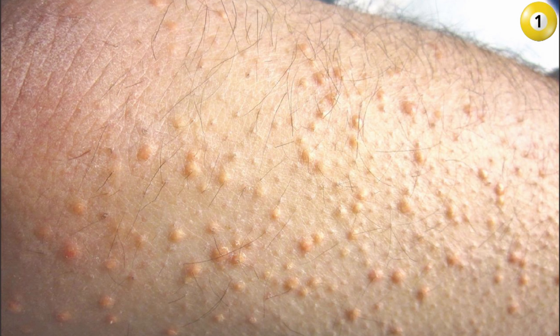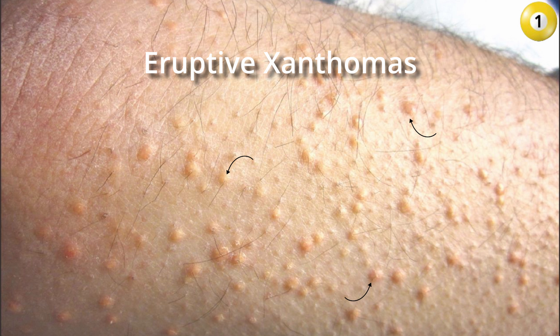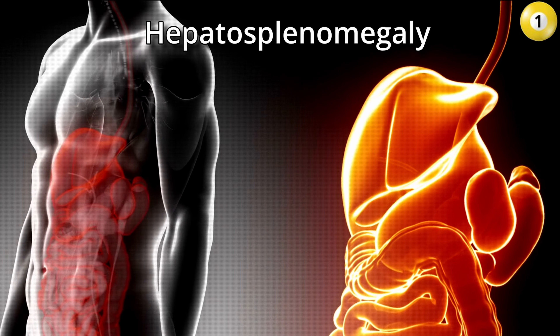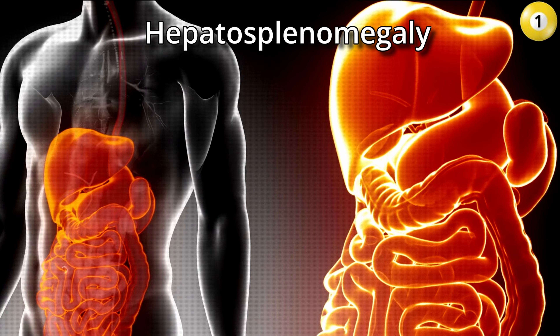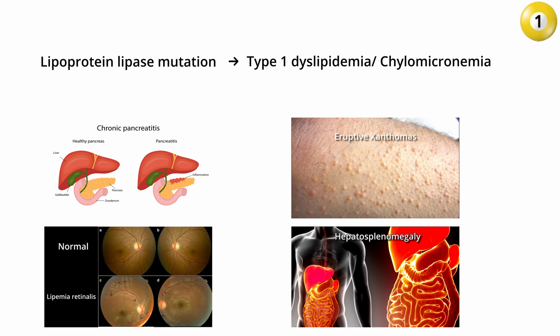Furthermore, these triglyceride-rich chylomicrons also deposit in the skin, causing eruptive xanthomas, and may also be seen in the retina, referred to as lipemia retinalis. Hepatosplenomegaly is also present when macrophages in the liver and spleen take up the excess chylomicrons. The condition is called type 1 dyslipidemia, or familial chylomicronemia.